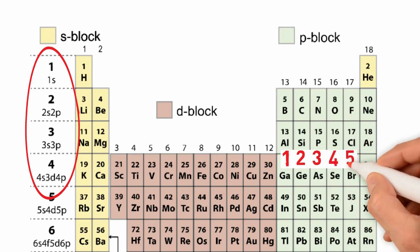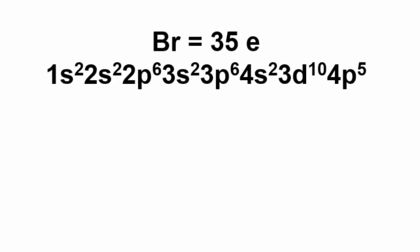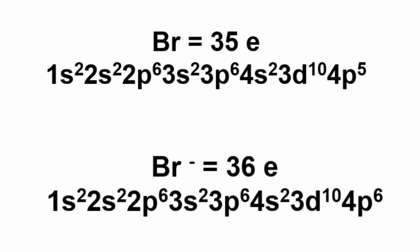If we were writing the electron configuration for the bromine anion, we would begin writing the same configuration as the neutral bromine atom, except the number of electrons in the p orbital changes from 5 to 6 because the bromine ion has 36 electrons.